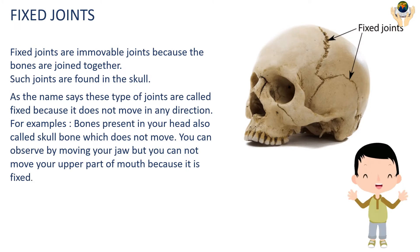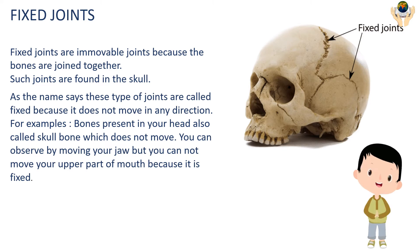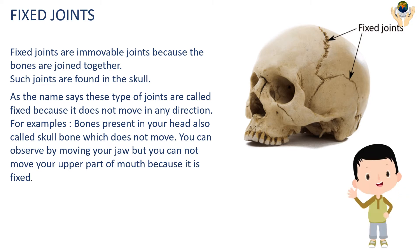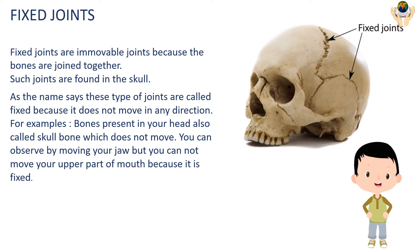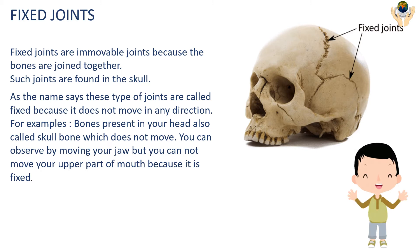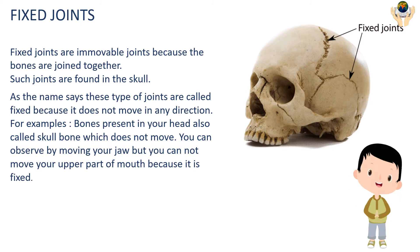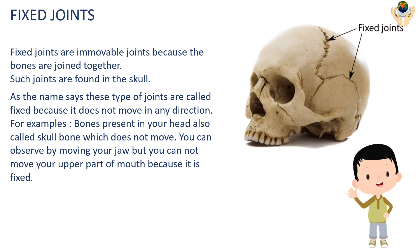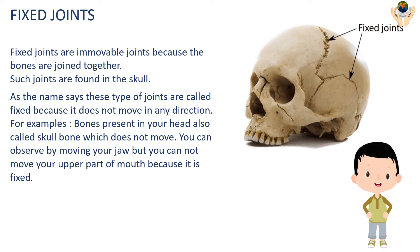Fixed joints are immovable joints because the bones are joined together firmly. Such joints are found in the skull. As the name says, these joints are called fixed because they do not move in any direction. For example, the bones present in your head — also called skull bones — do not move. You can observe this by moving your jaw, but you cannot move the upper part of your mouth because it is fixed.